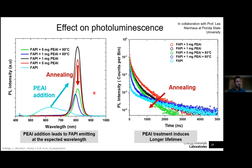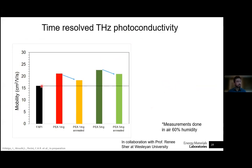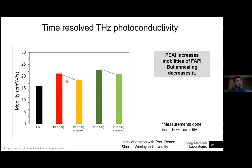These dynamics explain the enhancement in open circuit voltages observed in passivated films. To explain differences in currents, we can look at terahertz photoconductivity measurements, which allow us to extract the local mobility of carriers. Introducing phenethylammonium on the top surface improves mobilities; annealing decreases them slightly, but they still remain higher than in the pristine film. This suggests structural changes affecting the bulk and enhancing its properties, possibly due to interaction with air during characterization in the presence of oxygen and moisture.